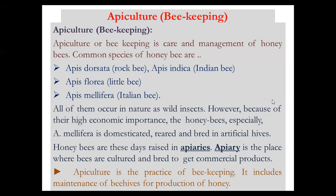Here some species of Apis are given. Apis dorsata is the largest bee. Apis indica is the Indian bee, as this species belongs to India. Apis florea is the smallest bee and is called the little bee. Apis mellifera is the Italian bee.